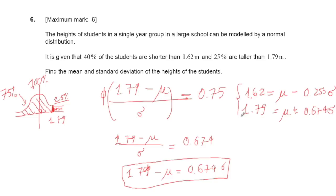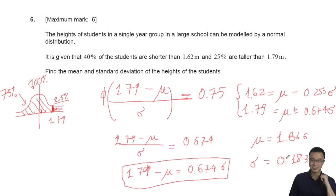Now we have a system of two equations. Using the calculator to solve the simultaneous equations, you will find that μ = 1.66 and σ = 0.183 (to three decimal places). That finishes this question.